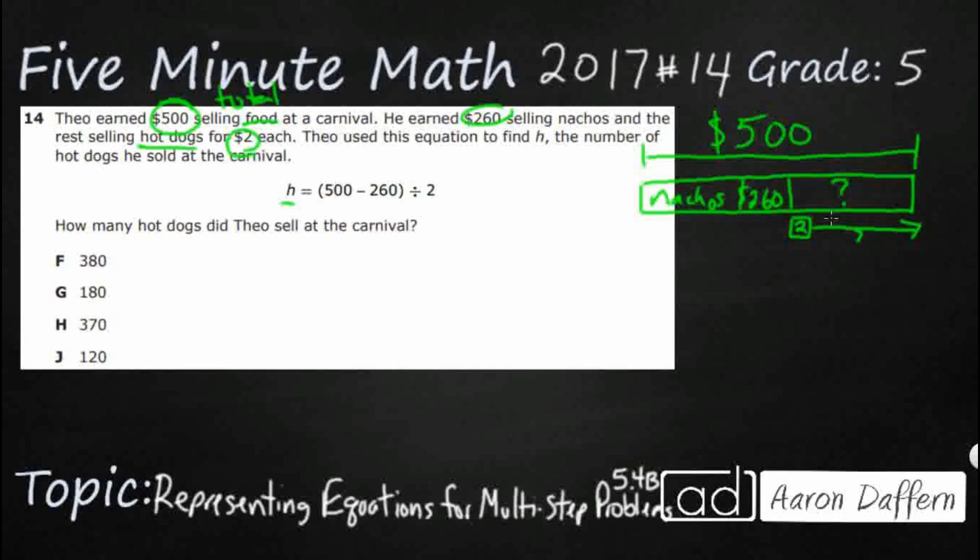So, that's why we have a subtraction first. We're going to use subtraction to figure out what this chunk is. And then we're going to use division to figure out out of that hot dog chunk, how many $2 hot dogs can we sell.